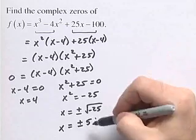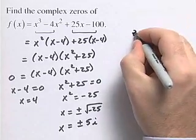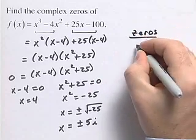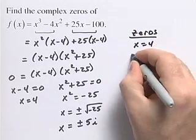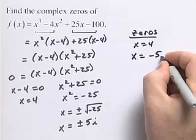So we have three zeros for this polynomial function, and our zeros are x equals 4, x equals negative 5i, and x equals 5i.